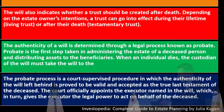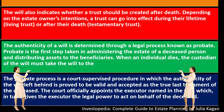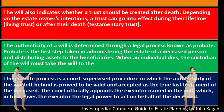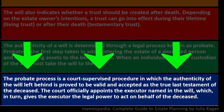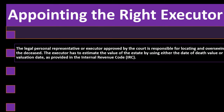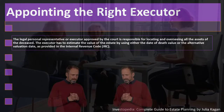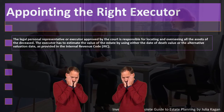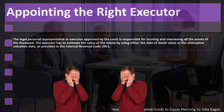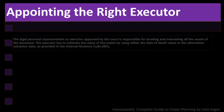The will must be proved valid and accepted as the true last testament — the final word. The court officially appoints the executor named in the will, giving the executor the legal power to act on behalf of the deceased. The person filled out a will, that person has now died, it has gone through probate, and the court has assigned the executor in accordance with the deceased's wishes.